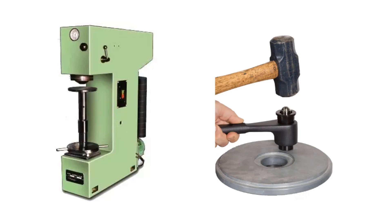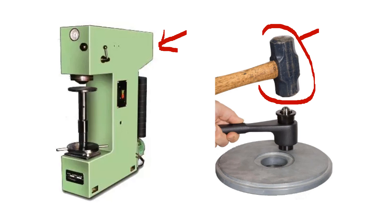To do hardness testing, we use certain equipment — there are machine-based and manual equipment. We apply pressure either automatically or by hammering. A ball or diamond-shaped tip is placed on the surface and hammered, making an impression. We then measure the depth of the impression, and the diameter — length and width — to calculate the hardness. I will show you the calculation for the Vickers scale.